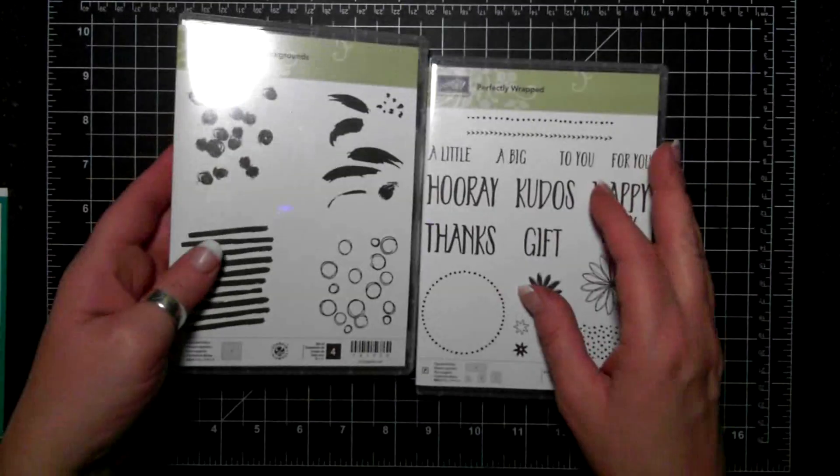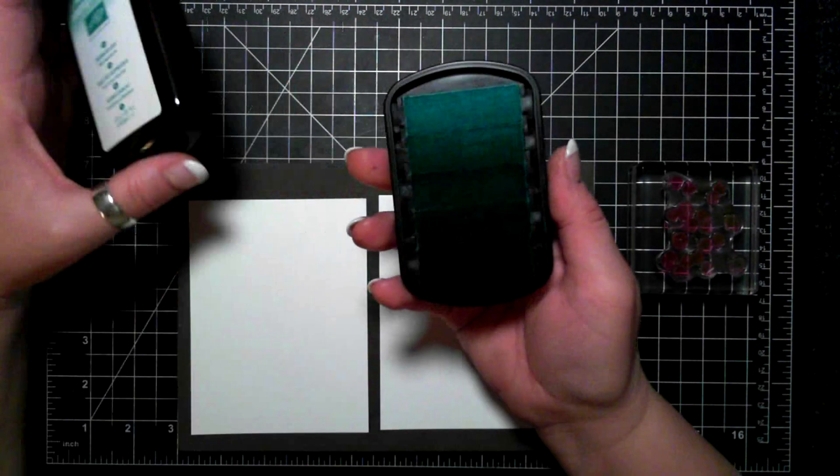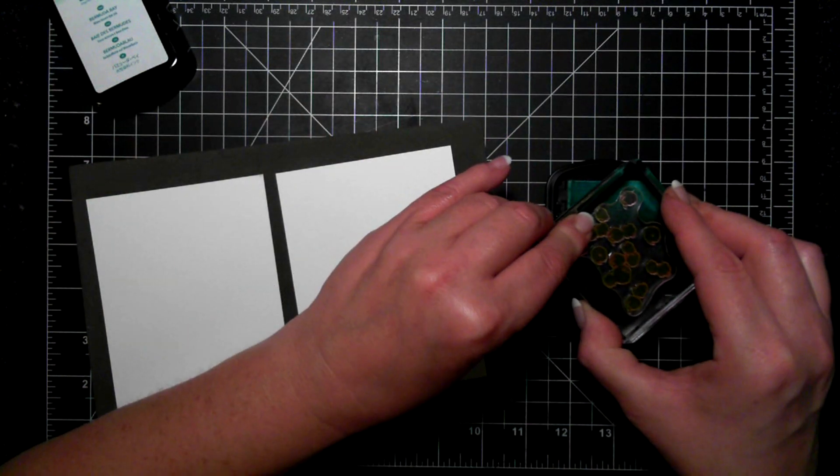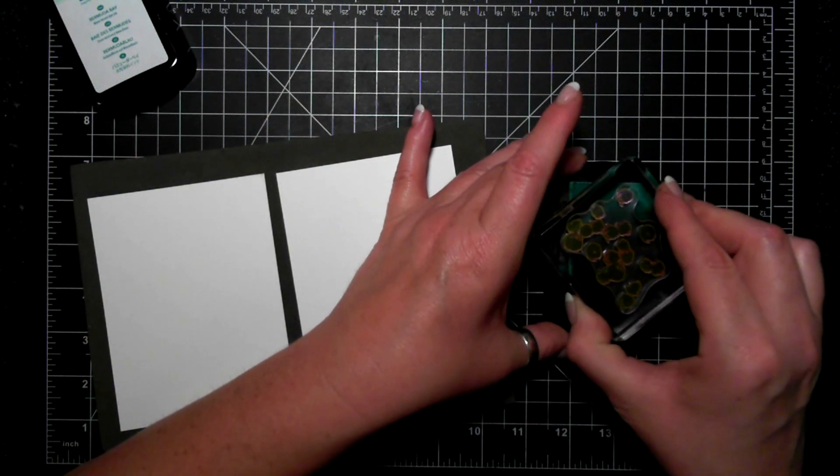To create my card today I'll be using the playful backgrounds and perfectly wrapped stamp set as well as the Bermuda Bay Ombre ink pad.